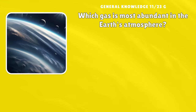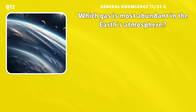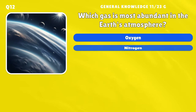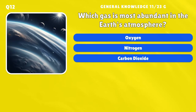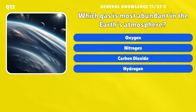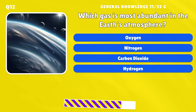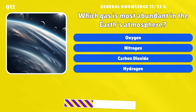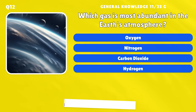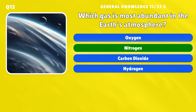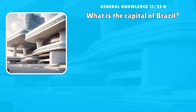Which gas is most abundant in the Earth's atmosphere? A) Oxygen, B) Nitrogen, C) Carbon dioxide, D) Hydrogen.